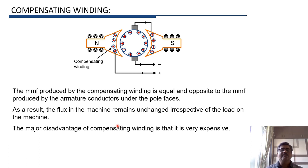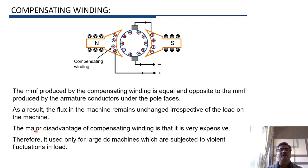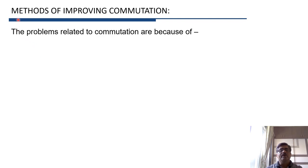The main disadvantage of compensating winding is that it is very expensive and takes up a lot of space in the machine. Therefore compensating winding is not normally used in small machines, but is normally used in large DC machines particularly if the machine is subjected to violent fluctuations in load. However, the compensating winding can neutralize the demagnetization effect but it cannot neutralize the cross-magnetizing effect.